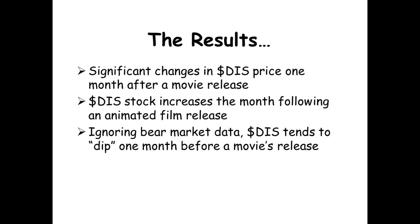Here are the results, without all the math and data. There are significant changes in Disney's price one month after a movie release — that's where the pattern is. There wasn't much of a pattern immediately around the releases, but one month out, Disney stock increases more than it should based on its expected price. Ignoring the bear market data and looking only at movies outside of 2007–2009, we also see a dip one month before the release. That may not hold true across all data, but excluding the bear market, it did hold.